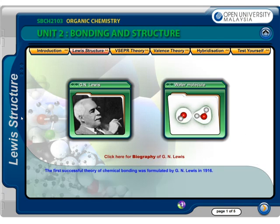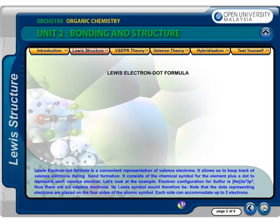The first successful theory of chemical bonding was formulated by G.N. Lewis in 1916. Lewis' electron dot formula is a convenient representation of valence electrons. It allows us to keep track of valence electrons during bond formation, and consists of the chemical symbol for the element plus a dot to represent each valence electron.